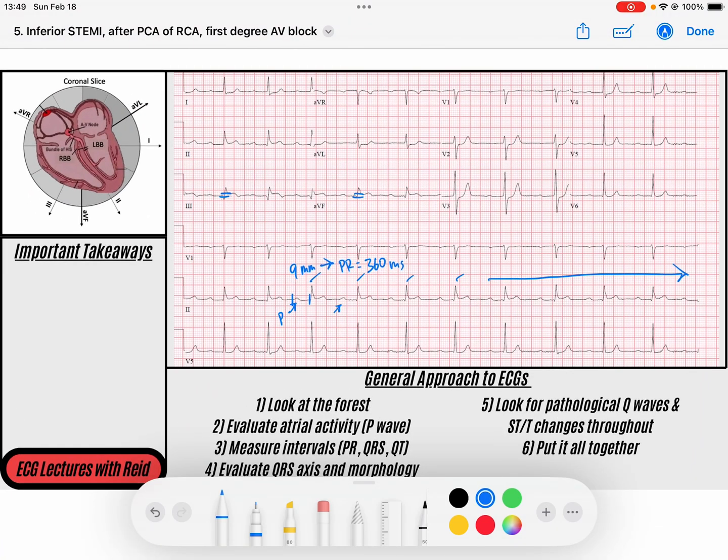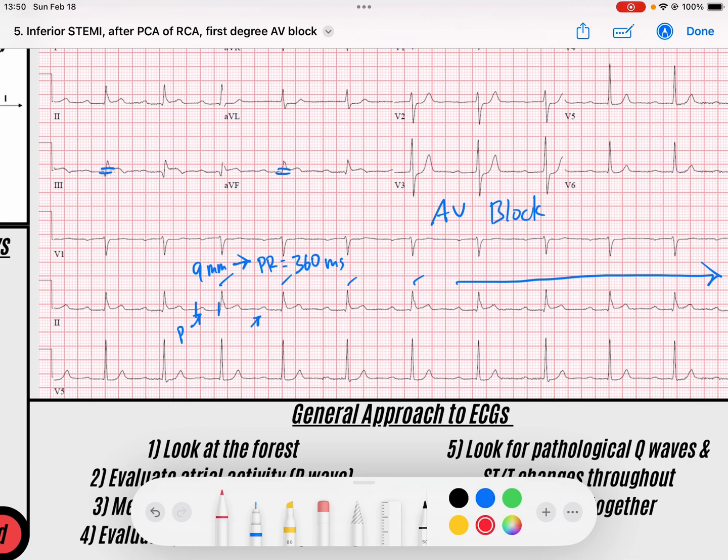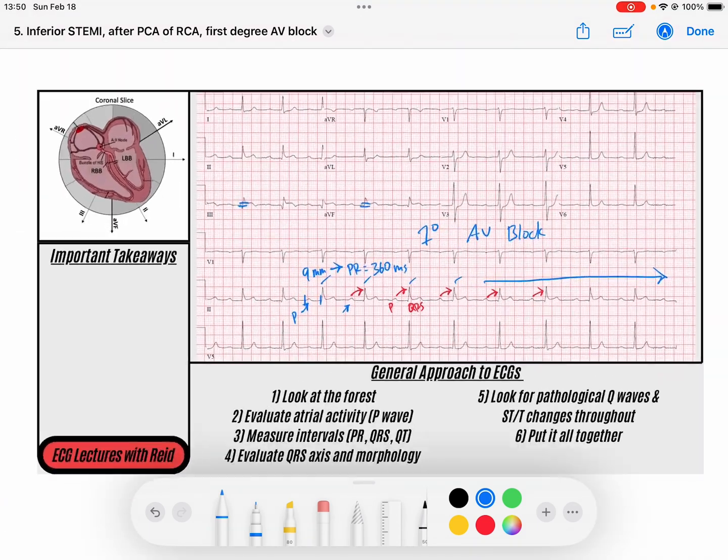And so that's greater than the maximum limit of normal, which is 200 milliseconds. So we have an AV block of some sort, meaning that the AV node is taking slower time. And so we look to make sure that every single P wave conducts to a QRS and that there are no other P waves that do not have QRSs. And we don't see that here. And so we see that this is every P to every QRS. It's just taking a little bit longer. And so this is a first degree AV block.